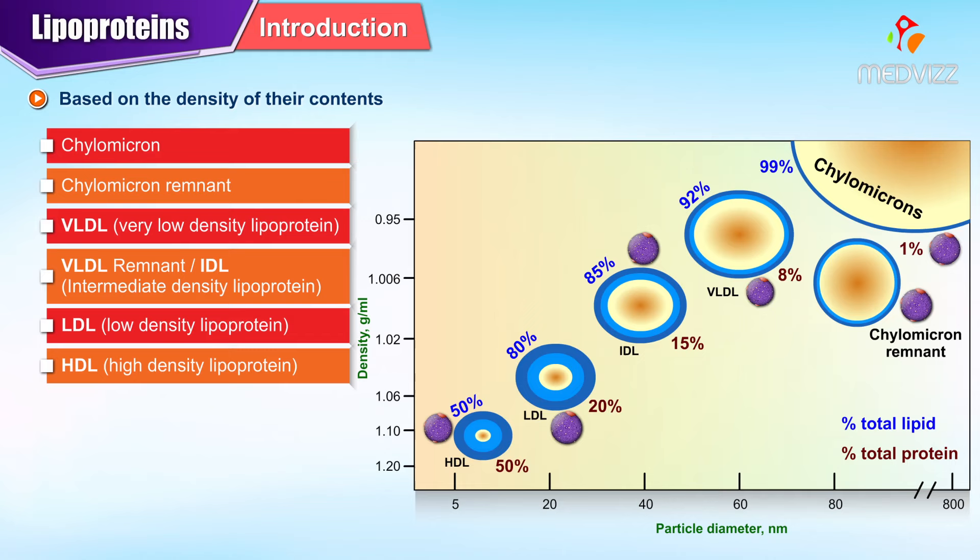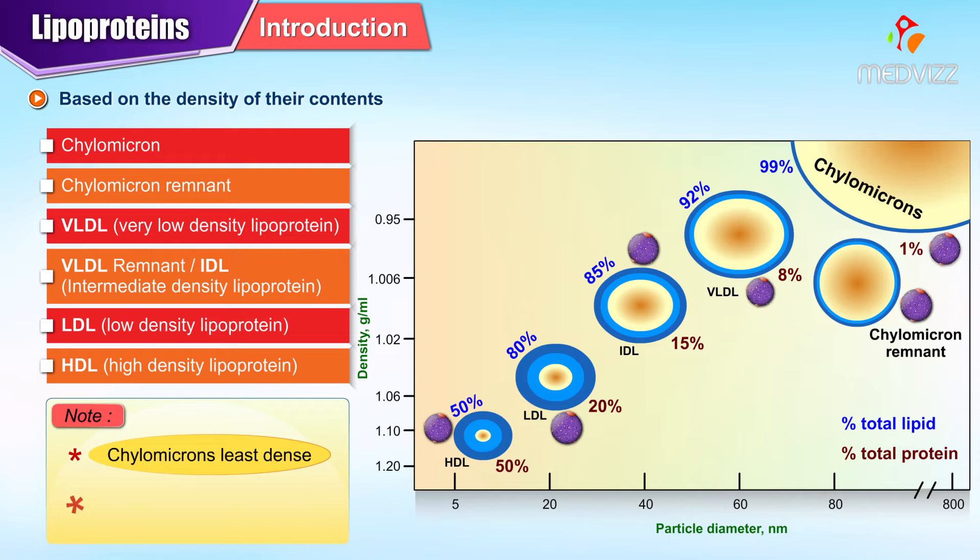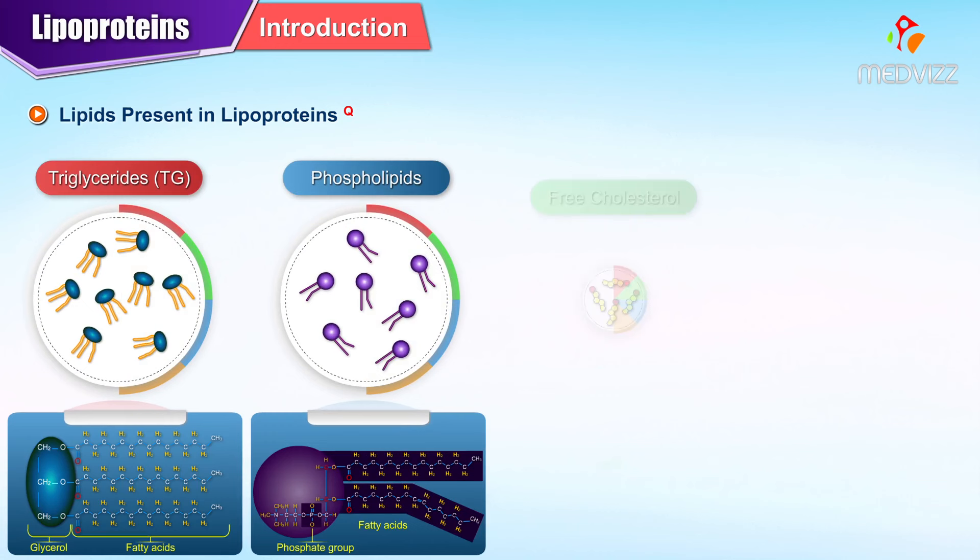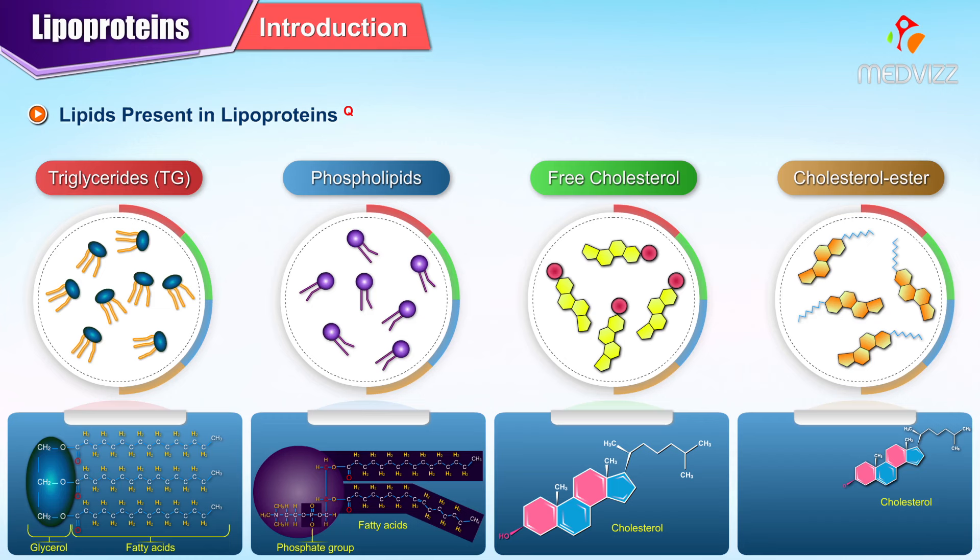An important point to note is that chylomicrons are the least dense and HDL are the most dense. Lipids present in lipoproteins include triglycerides, phospholipids, free cholesterol which is unesterified, and cholesterol ester.